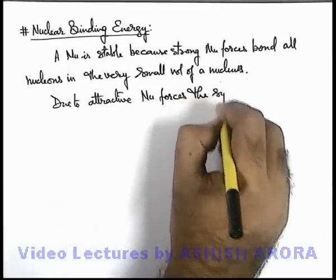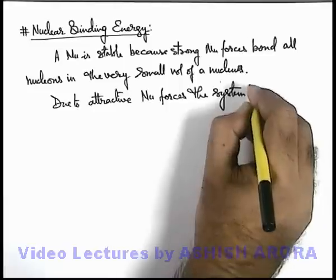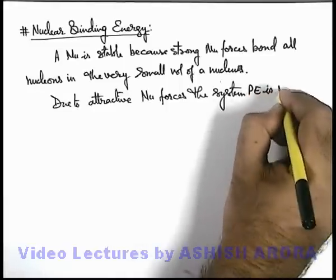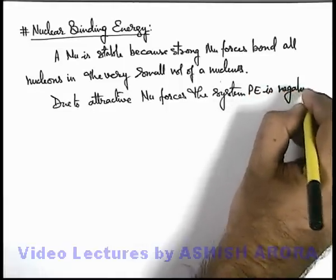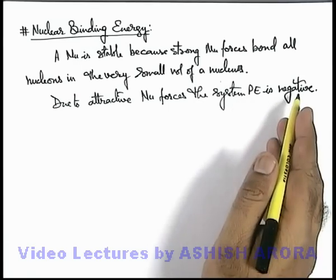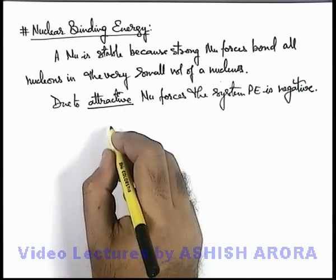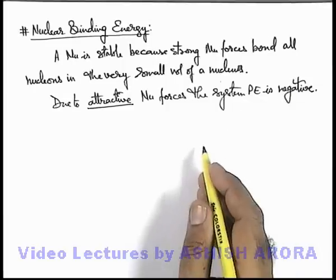the system potential energy is negative. We already discussed that whenever a system is stable and it is under the influence of attractive forces, then the overall energy of the system must be negative.